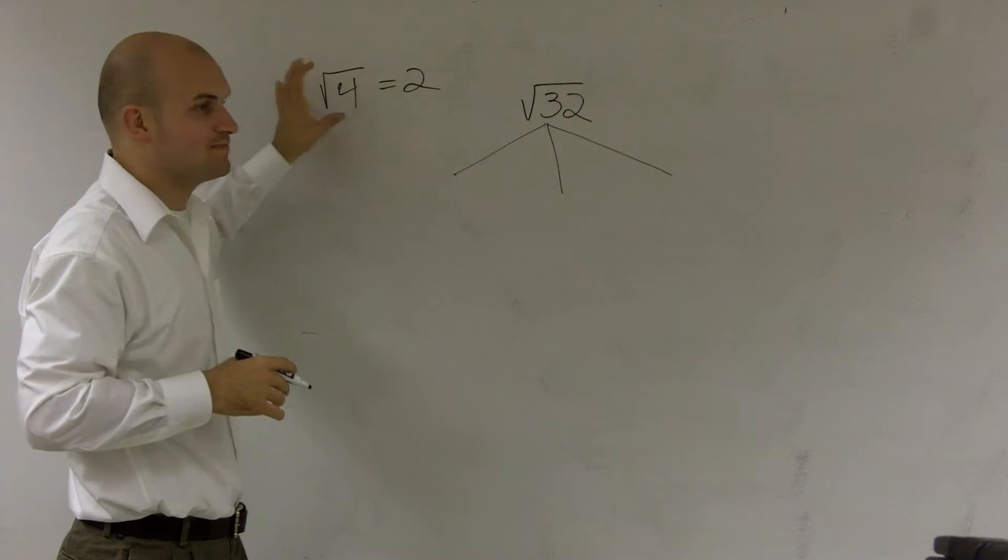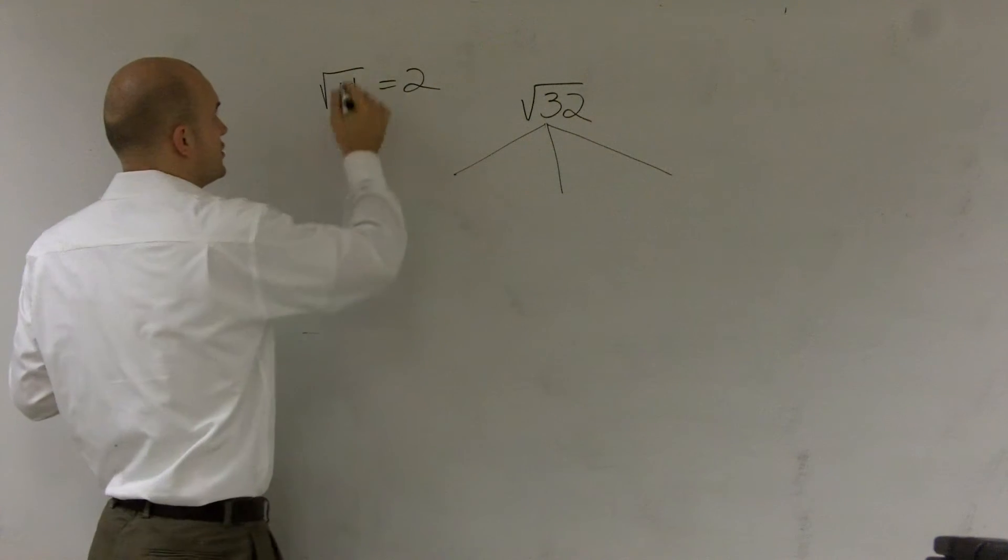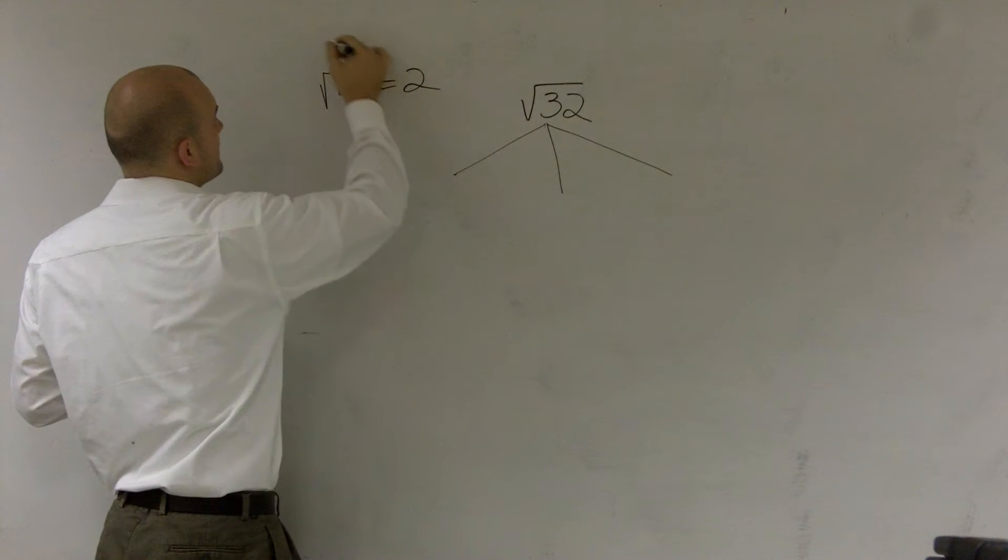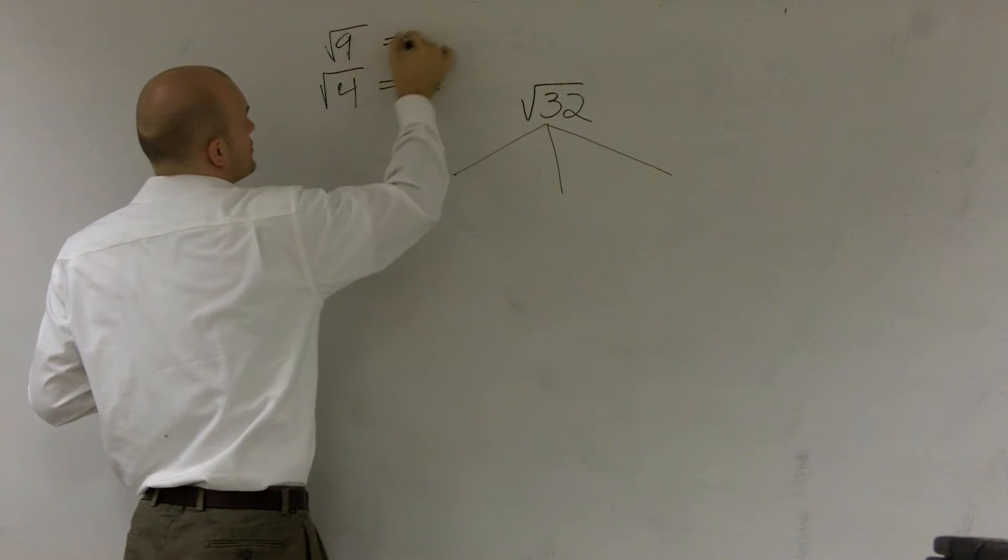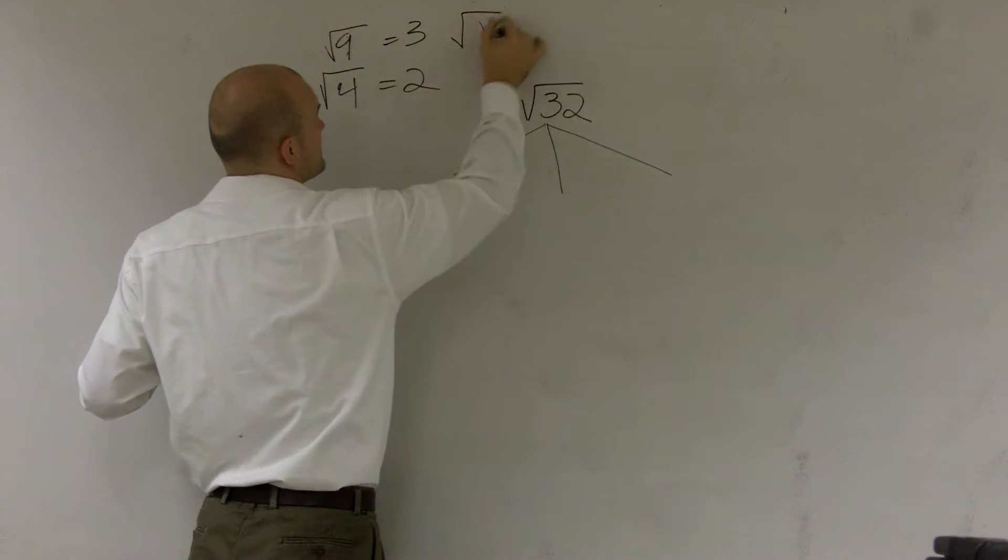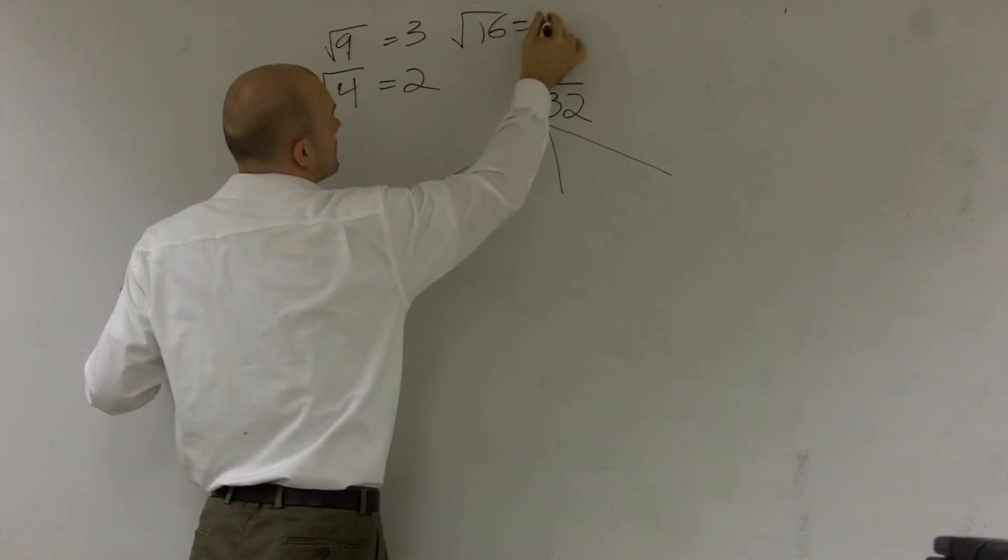So we can always take certain numbers that we can take the square root of. You have the square root of 4. You have the square root of 9, which is equal to 3. You have the square root of 16, which equals 4.